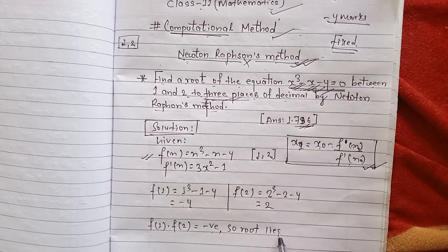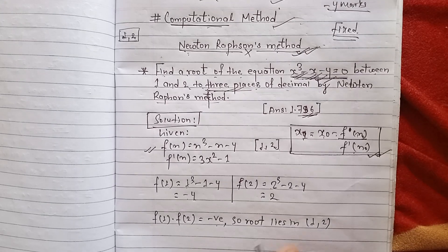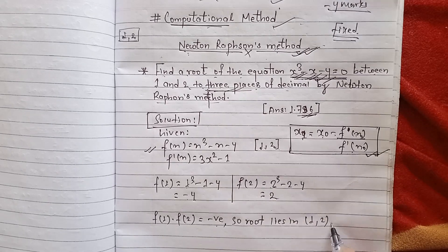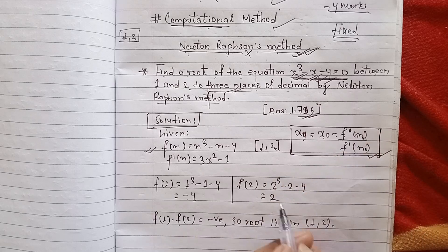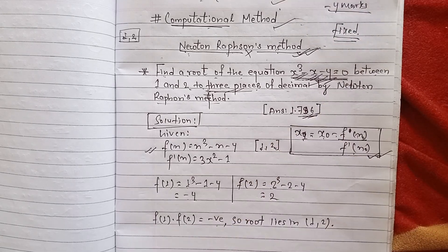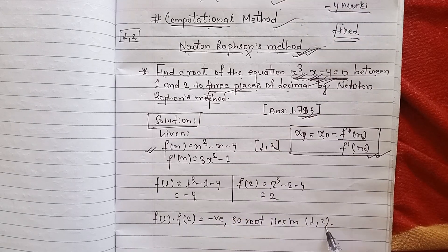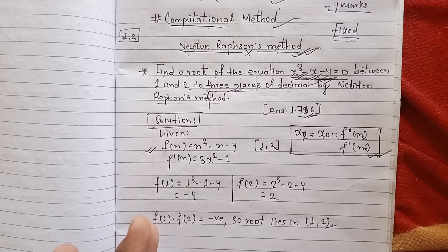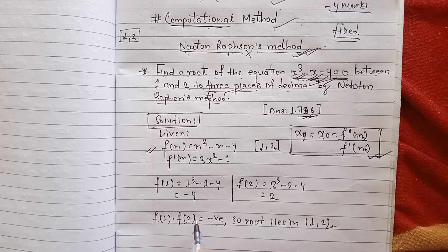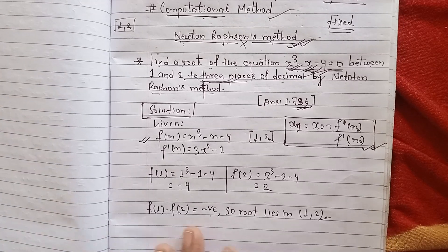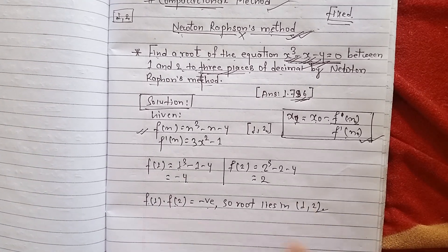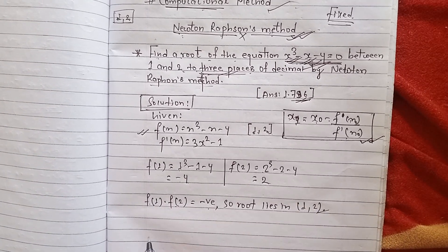The root lies between 1 and 2. We can prove that the root lies in this interval — the root node is between 1 and 2. Now we will address the main issue of finding the root.